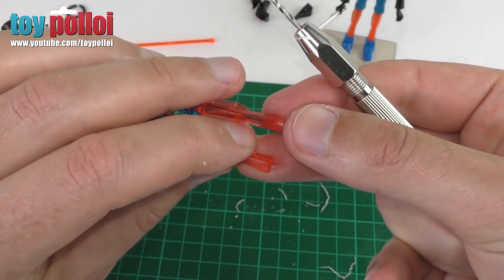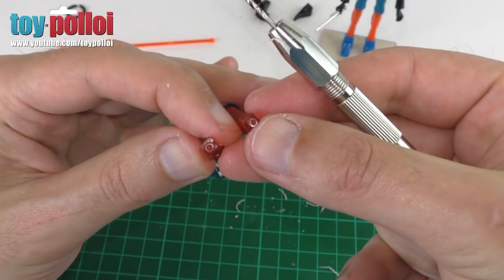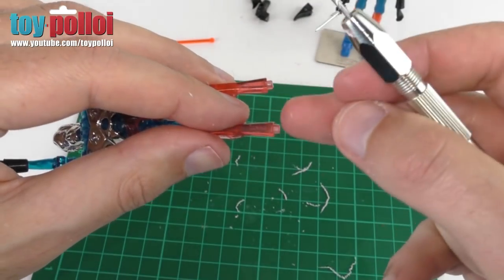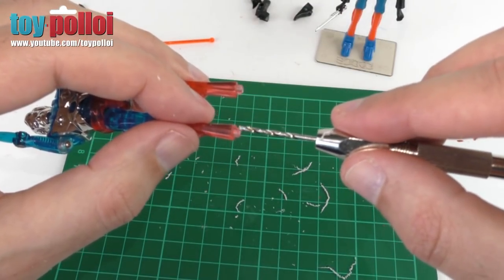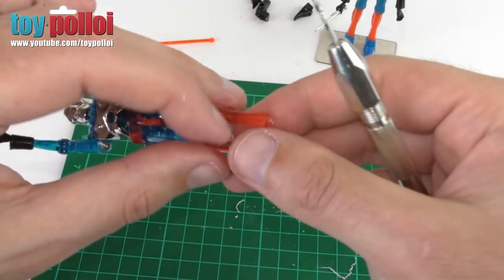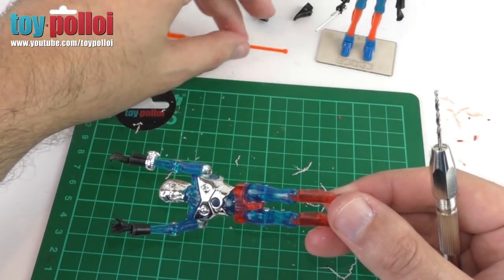So I've now just drilled the two holes in the bottom of these legs. It's slightly easier on these because you can actually see how far the drill bit is going into the plastic because it's clear. Now all I've got to do is modify these Lego antenna again.